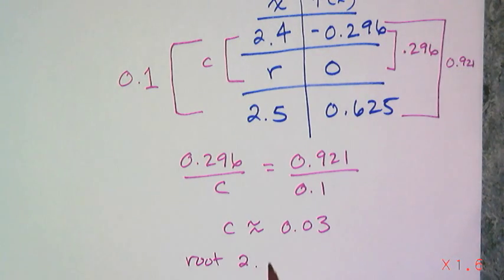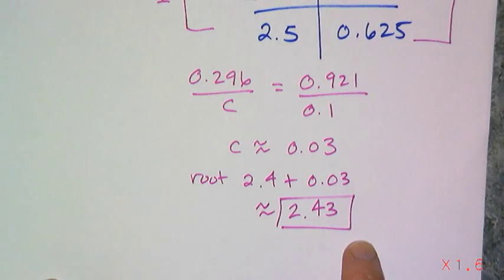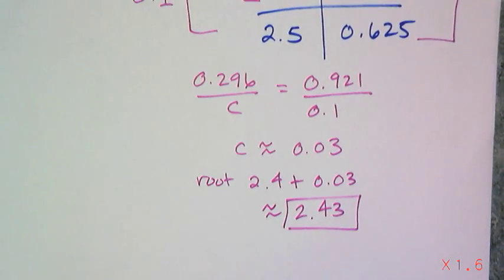And I get c is approximately equal to 0.03, which means my root is located at 2.4 plus 0.03, or approximately 2.43. And so that's the approximation of my root to the nearest hundredth.